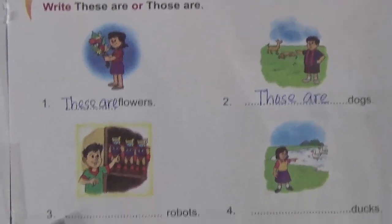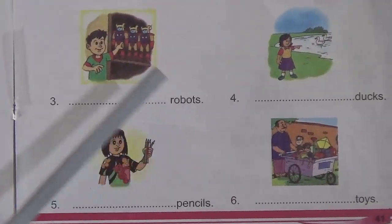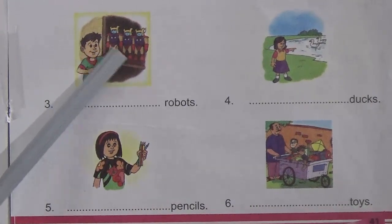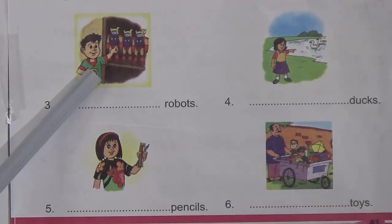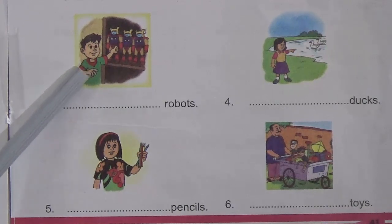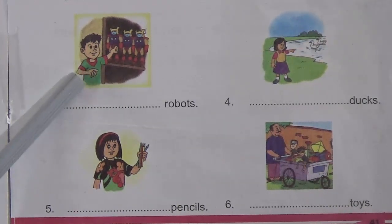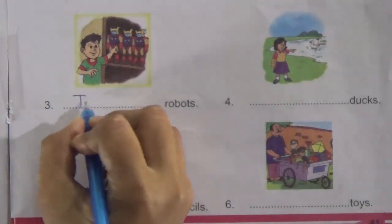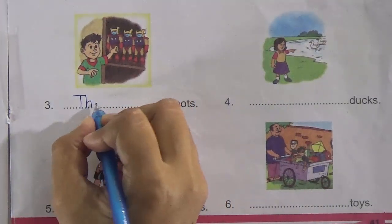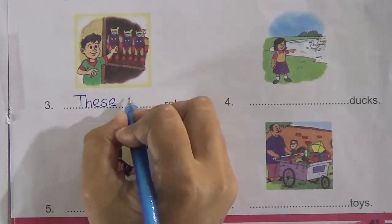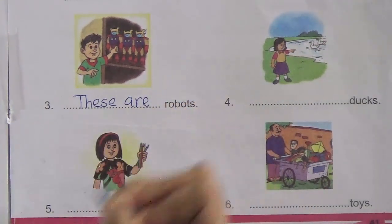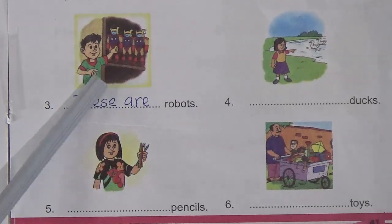Now next one, number three: blank rovers. There are three rovers and they are close to — near the boy. So we will write 'these are', because 'these' is the plural form of 'this', and there are three rovers.